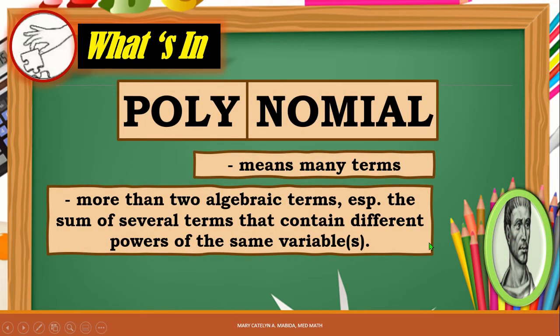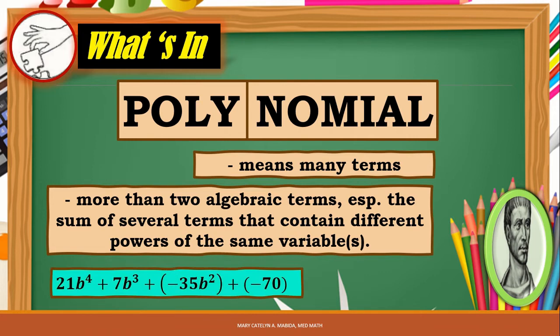Let's recall what a polynomial is. A polynomial means many terms, or more than two algebraic terms — especially the sum of several terms that contain different powers of the same variables. For example: 21b⁴ + 7b³ + (-35b²) + (-70).